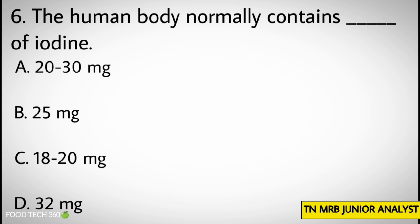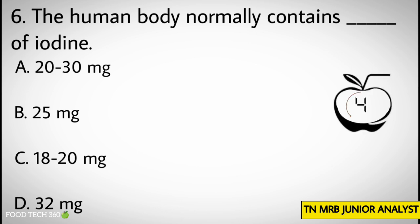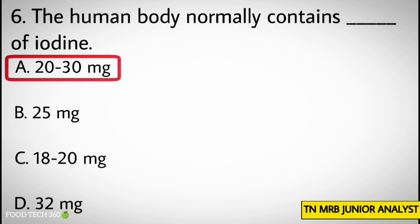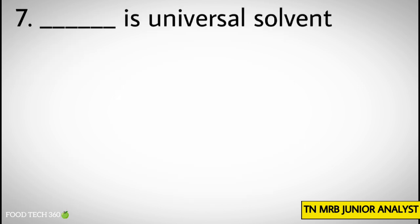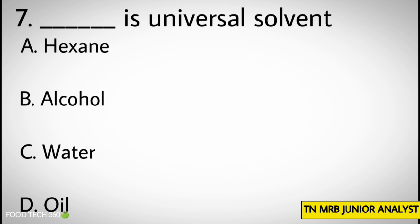Question number 6: The human body normally contains how much iodine? Options: A. 20–30 mg, B. 25 mg, C. 18–20 mg, D. 32 mg. Correct answer: A. 20–30 mg.